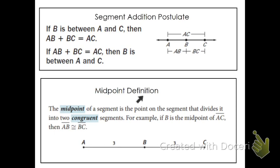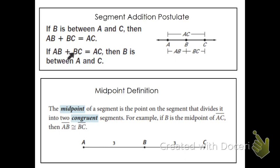This one's kind of a definition, could almost be called a postulate. But the segment addition postulate: if B is between A and C, then AB plus BC equals AC when referring to segments. If AB plus BC equals AC, then B is between A and C. This is obviously true and doesn't have to be proven.